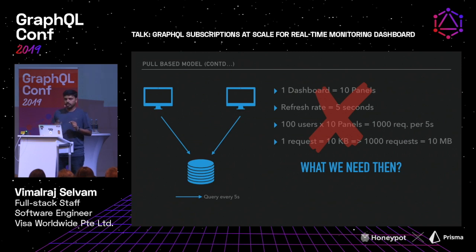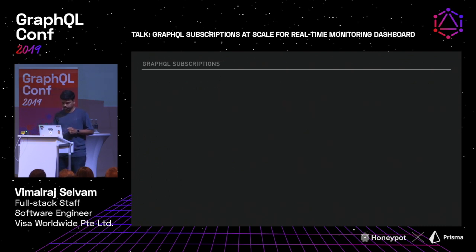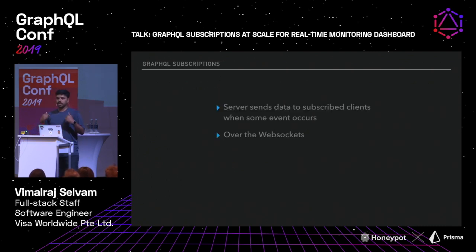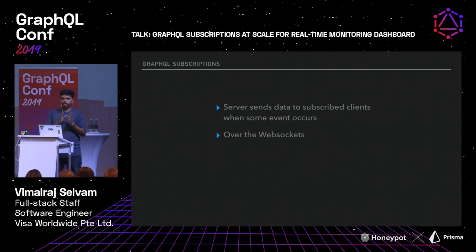So what did we need? Grafana's pull-based model has the client requesting data from the server. Instead, we wanted to push the data to the client from the server — that means WebSockets. We basically wanted to serve data over WebSockets. Since most of our backend is powered by GraphQL, the obvious use case was to use GraphQL subscriptions, where the server sends data to subscribed clients when some event occurs, transported over WebSockets.